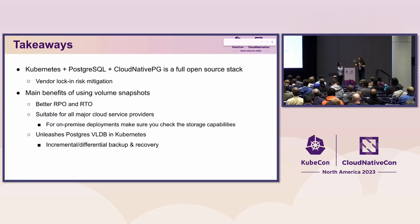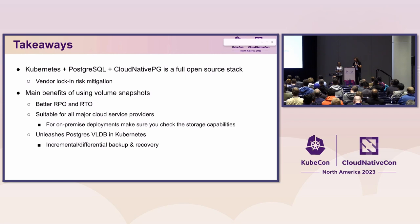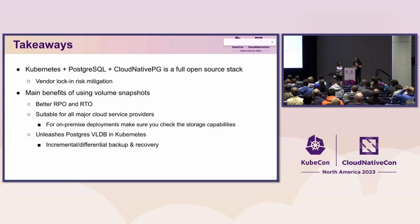Key takeaways: we've got a full open source stack to run Postgres in Kubernetes — Cloud Native PG, PostgreSQL, and Kubernetes — so you can really mitigate the risk of vendor lock-in. The main benefit of using volume snapshots is to have better RPO and RTO goals, which are the business continuity goals we need to achieve. They are suitable for all major cloud service providers, but also available on on-premises. Check what your storage classes provide, do your benchmarks, do your tests, and if you can, use volume snapshots.